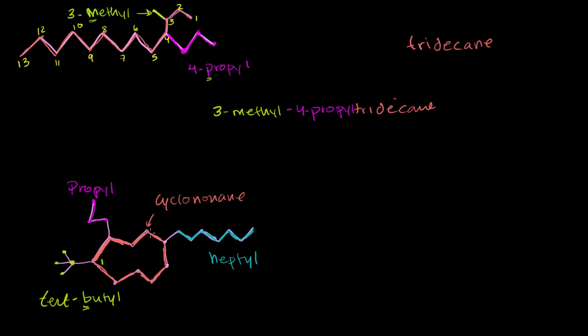And then to figure out which direction to keep numbering in, we just go in the direction where we will encounter the first side chain. So we'll go in this direction because we get right to the propyl group. 1, 2, 3, 4, 5, 6, 7, 8, 9. So this compound, we're going to start with the alphabetically first side chain. So it's 1-tert-butyl.